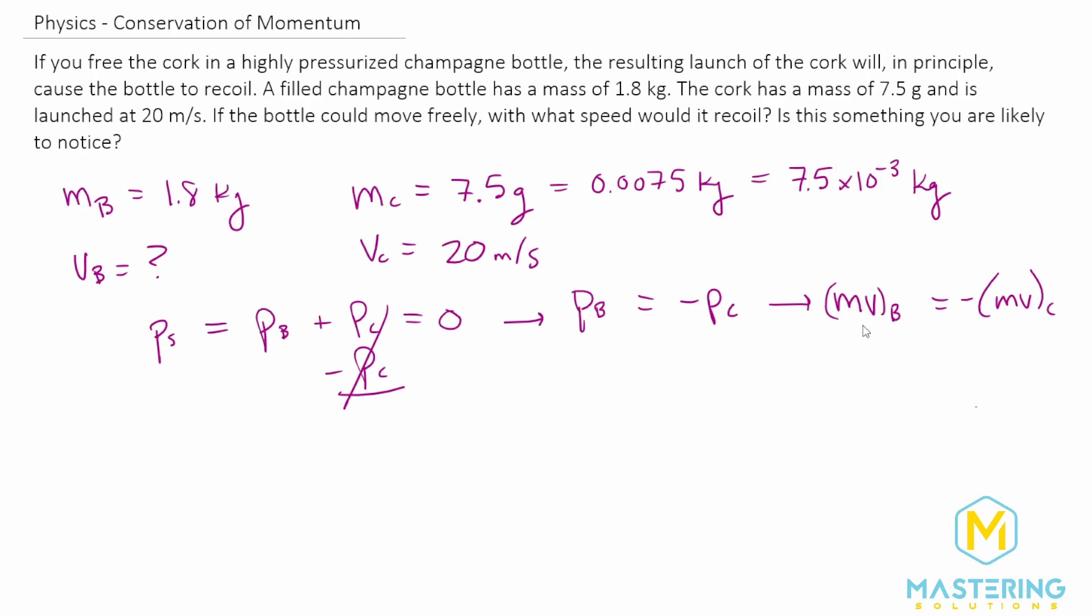We're trying to find the velocity of the bottle. So let's divide both sides by the mass of the bottle to isolate the velocity of the bottle.